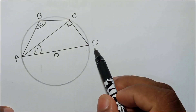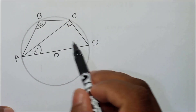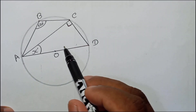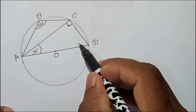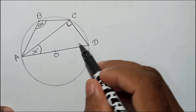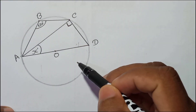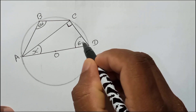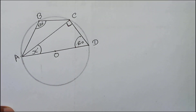ABCD is a cyclic quadrilateral because all vertices A, B, C, D lie on the circumference. So in a cyclic quadrilateral, opposite angles are supplementary — angle ABC plus angle CDA must equal 180 degrees. So if this angle is 120, this one must be 60, because 180 minus 120 equals 60.